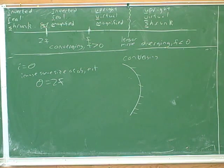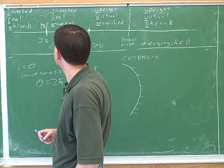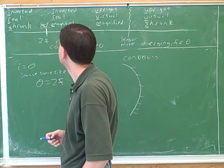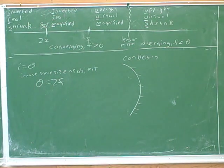Is the image going to be real or virtual based on our chart? It's going to be a real image. Because we're here in the real area. And is it going to be inverted or upright? It's going to be inverted. Because we're here in the inverted area as well.